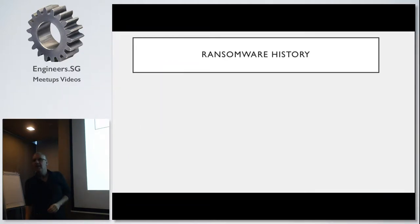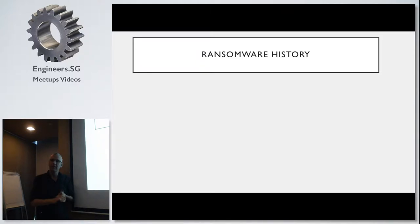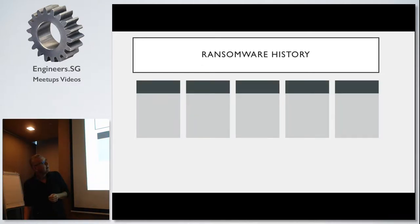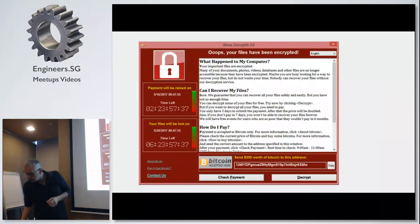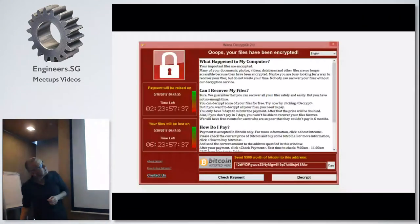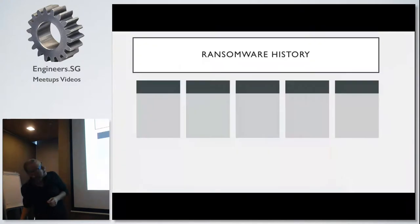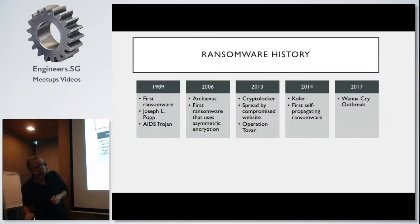The total ransom WannaCry collected into their Bitcoin wallets was only about $40,000 to $50,000 — not very much considering 200,000 machines were infected. Most people didn't pay. The first ransomware was actually in 1989, which I didn't know.